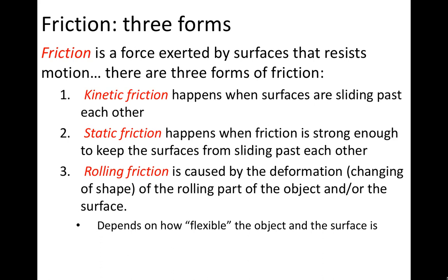Rolling friction depends on how flexible the object or how flexible the surface is. And generally, we are going to assume that our objects are rigid, that they don't really change shape, that they're not flexible. And so most of the time, we're going to ignore rolling friction. But it is important to discuss because rolling friction is almost always less than kinetic friction. That's why we take advantage of things like wheels or rollers to move objects. The point is to reduce the friction between the surfaces.